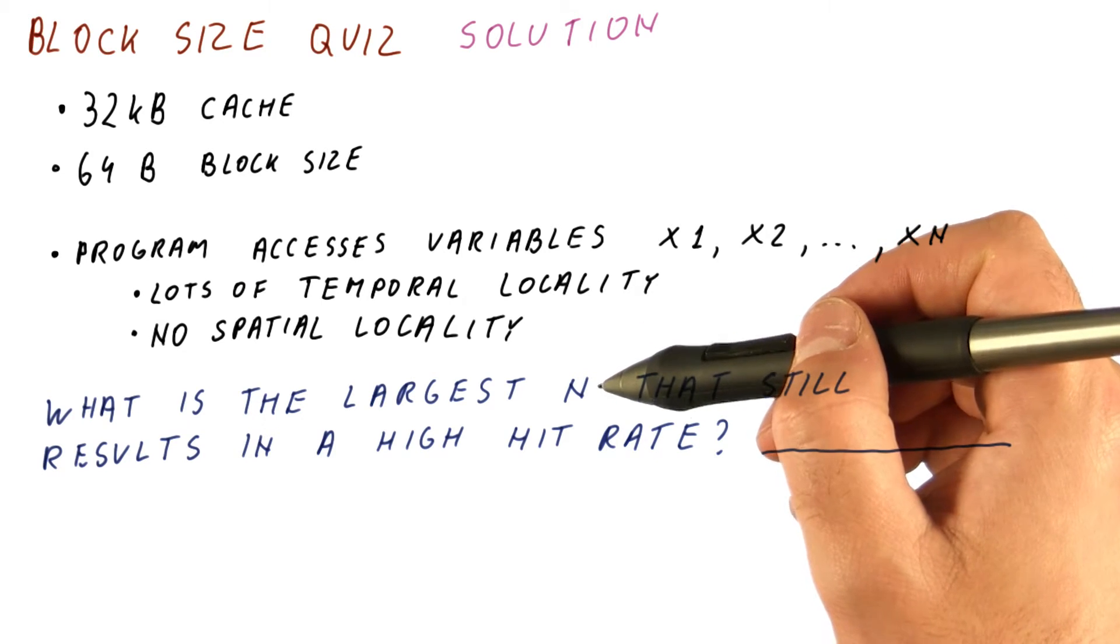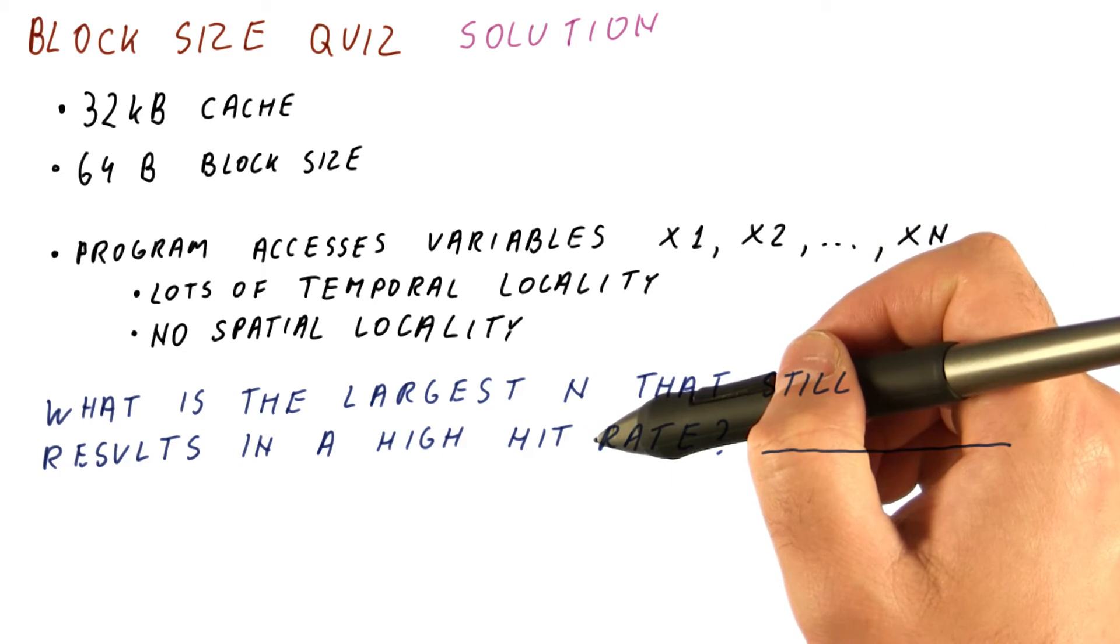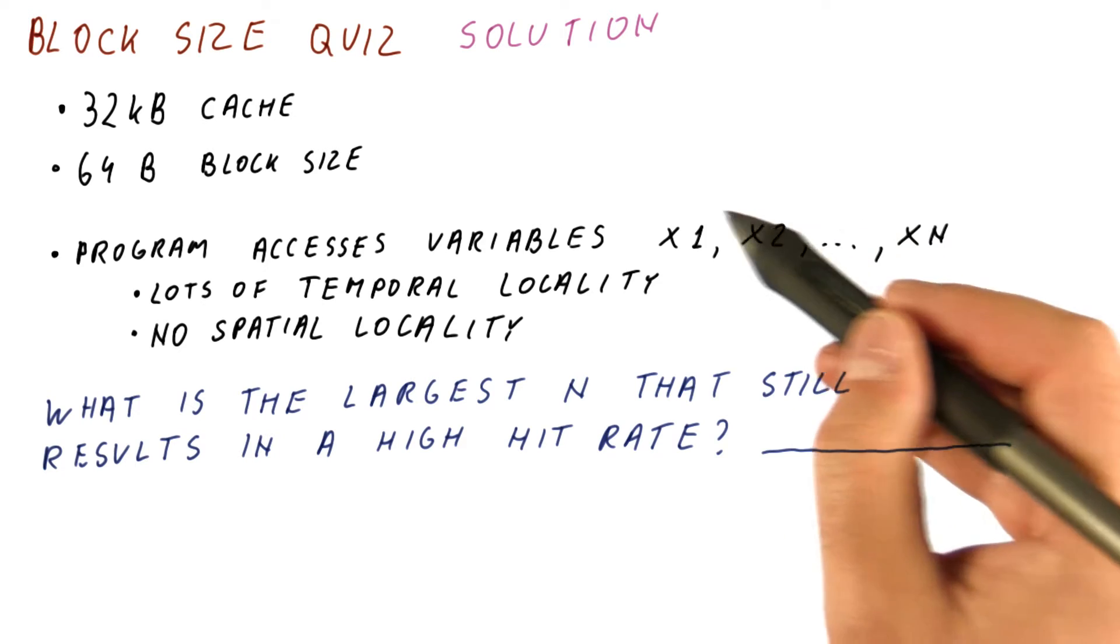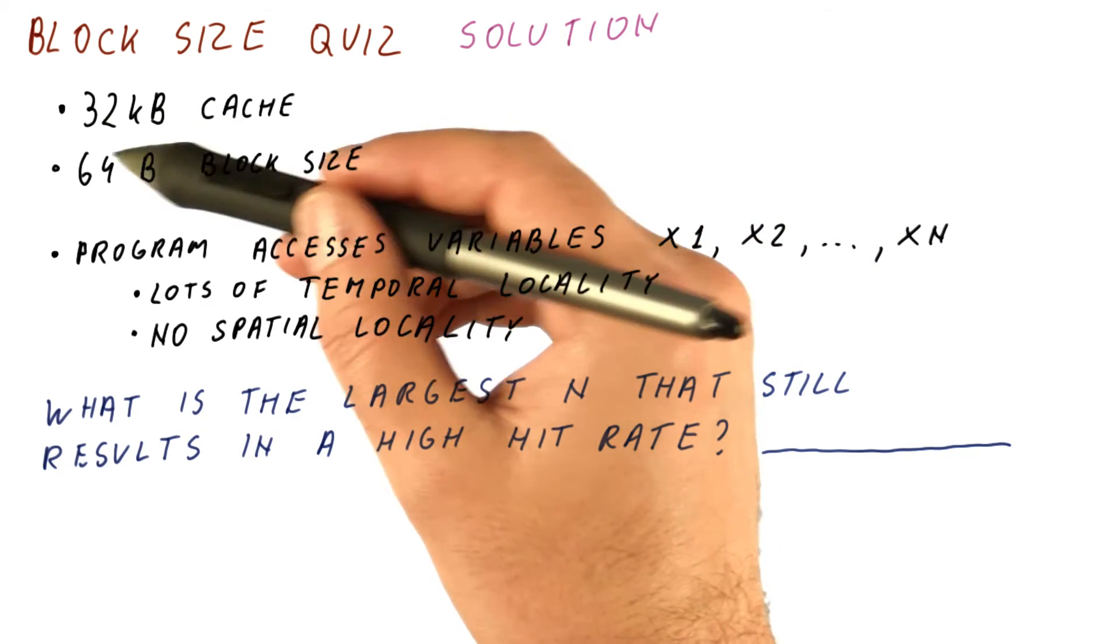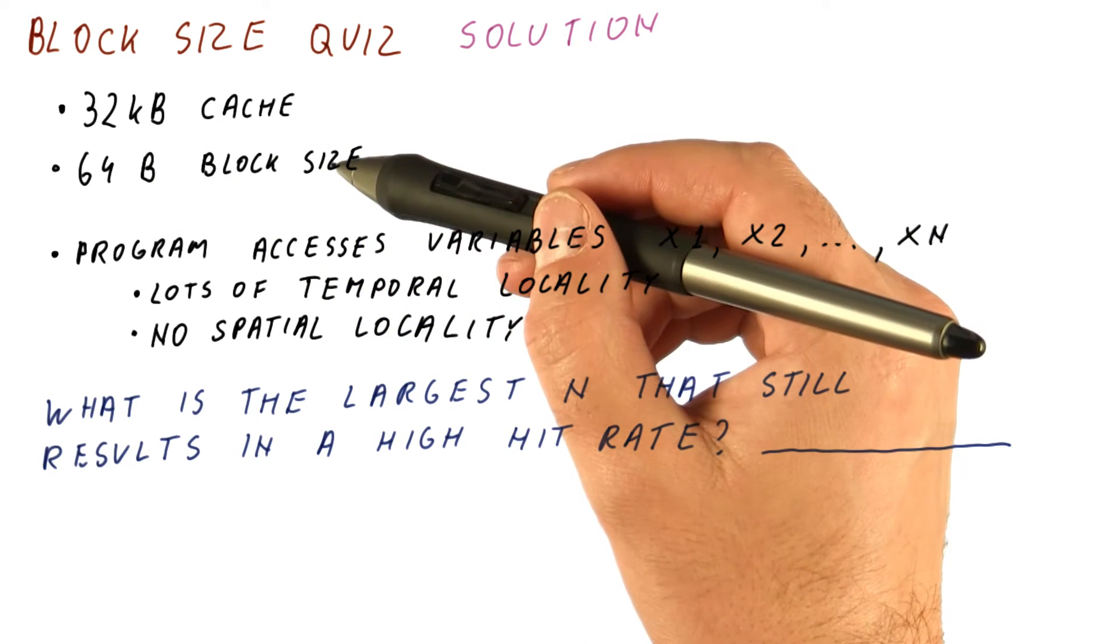So the largest N that still results in a high hit rate is, how many blocks can we fit in our cache? It's a 32 kilobyte cache, there are 64 byte blocks, how many blocks do we have?